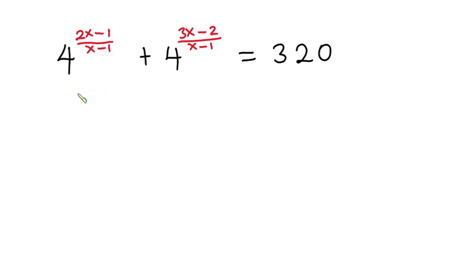Hello everyone! In this video we have a nice exponential equation. We have 4 to the power (2x minus 1) over (x minus 1) plus 4 to the power (3x minus 2) all over (x minus 1). And this whole thing is equal to 320. We have to find the value of x.